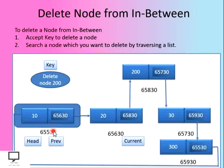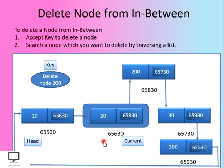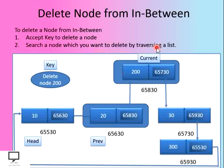Let's start from the head node and traverse the list, taking care of two pointer variables: previous and current. This is my previous node and this is my current node. Let's check whether the current node holds the value we want to delete — no, so let's move forward. Now this is the previous node and this one is the current node. Let's check whether this current node holds the key value we want to delete.